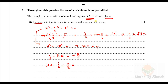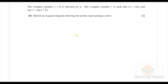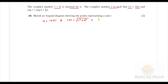Let's do the second part. The complex number 1 + 2i is denoted by u. The complex number v is such that the modulus of v is 2 times the modulus of u. First, we calculate the modulus of u: |u| = √(1² + 2²) = √5. The argument of v is the argument of u plus π/3.